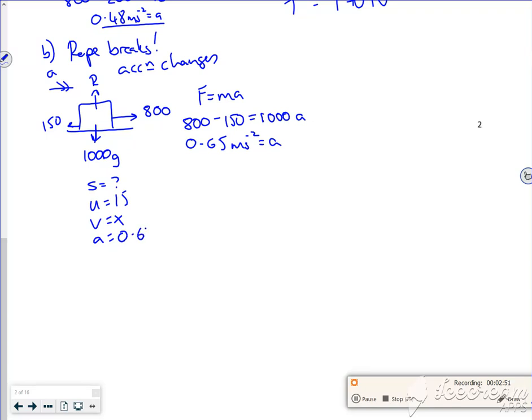v is not first about, acceleration is 0.65, and t is the first four seconds. The one without v is s equals ut plus a half a t squared. So s is 15 times 4 plus a half times 0.65 times 4 squared, which gives me an s value of 65.2 meters.